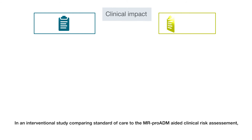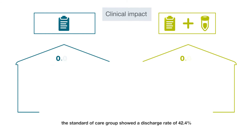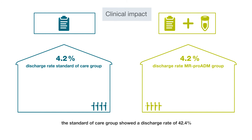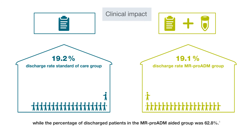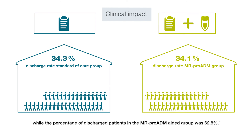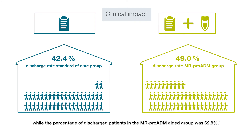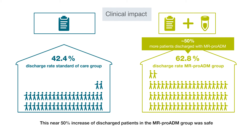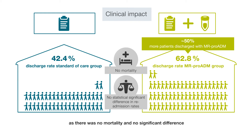In an interventional study comparing standard care to the MR-PROADM-aided clinical risk assessment, the standard of care group showed a discharge rate of 42.4%, while the percentage of discharged patients in the MR-PROADM-aided group was 62.8%. This near 50% increase of discharged patients in the MR-PROADM group was safe, as there was no mortality and no significant difference in readmission rates compared to the control group.